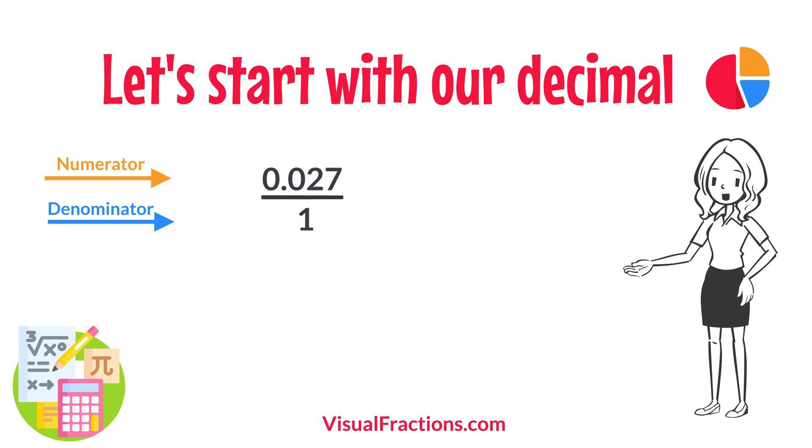This sets up the conversion process where we multiply both the numerator, 0.027, and the denominator, 1, by 1,000 because there are three decimal places.